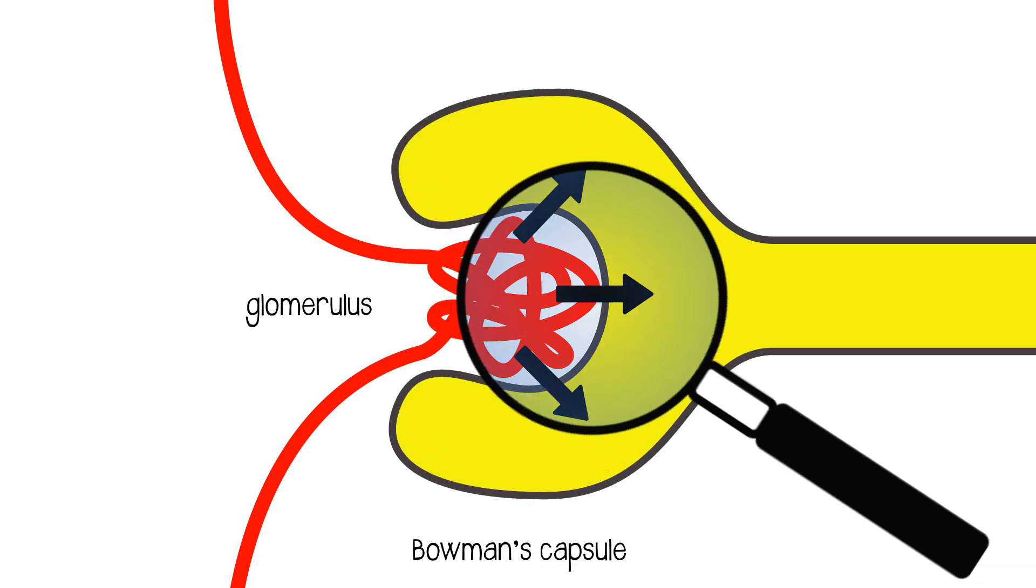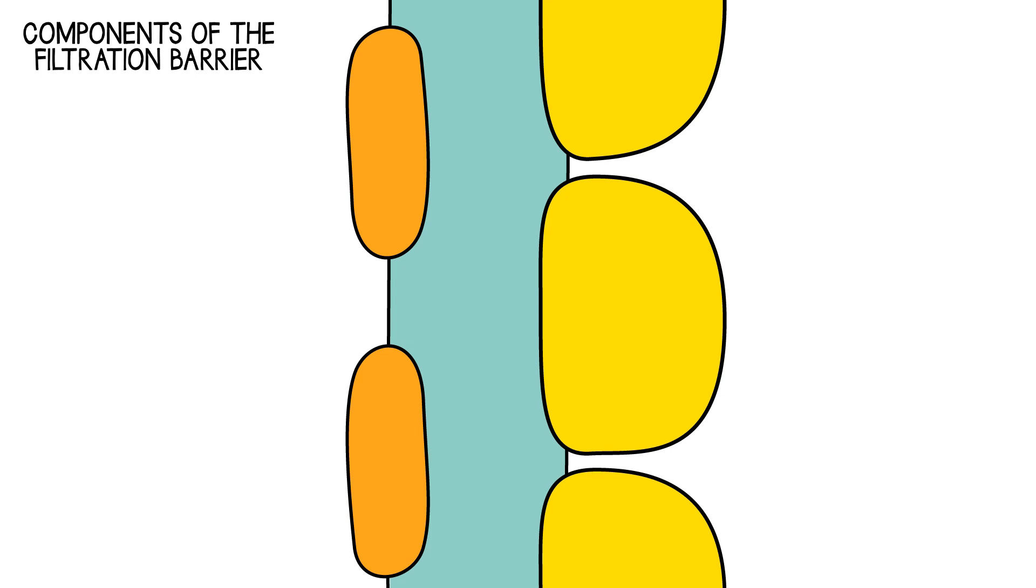So what gets filtered? Well, really things that are small enough to be filtered, because the filtration barrier excludes larger molecules, and also in particular blood cells.